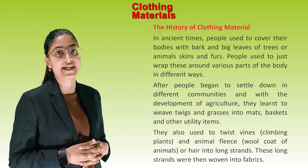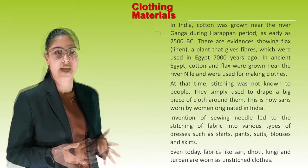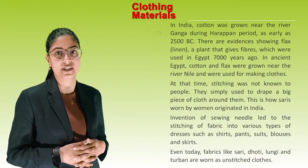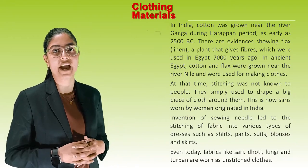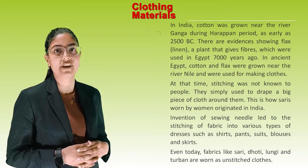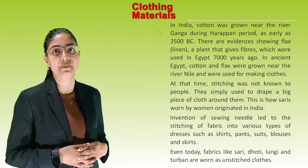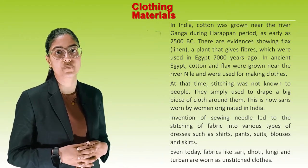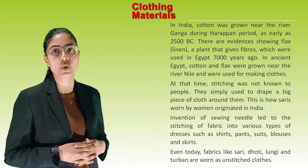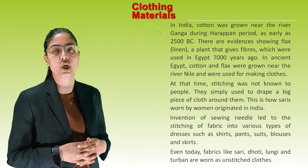These long strands were then woven into fabrics. In India, cotton was grown near the river Ganga during the Harappan period, as early as 2500 BC. There is evidence that flax, a plant that gives fibres, was used in Egypt 7000 years ago. In ancient Egypt, cotton and flax were grown near the river Nile and were used for making clothes.